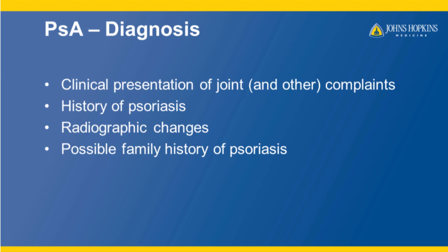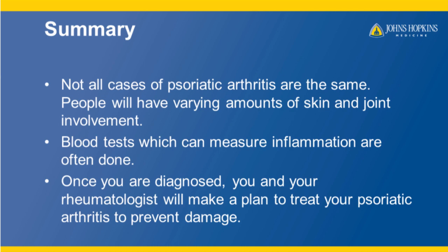So how is the diagnosis made? The clinical presentation of the joints and other complaints are taken into consideration. The physicians will ask you if you have a history of psoriasis. They will look for radiographic changes, meaning changes that may occur in x-rays of your hands or feet. And possibly you have a family history of psoriasis. Not all cases of psoriatic arthritis are the same, and people have varying amounts of skin and joint involvement. Blood tests that measure inflammation can often be drawn and measured to see how active your disease is. Once you are diagnosed, you and your rheumatologist will make a plan to treat your psoriatic arthritis to prevent additional damage.